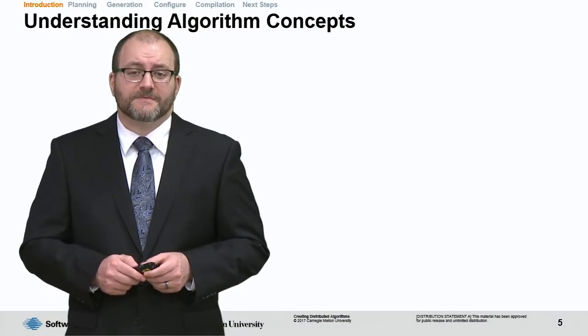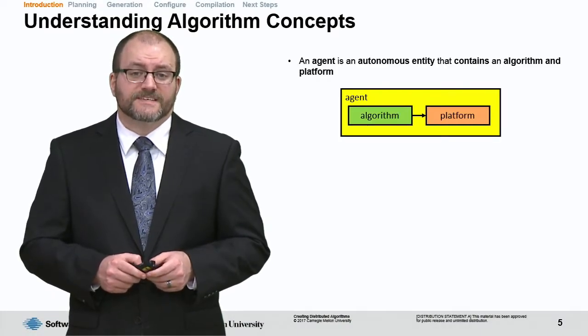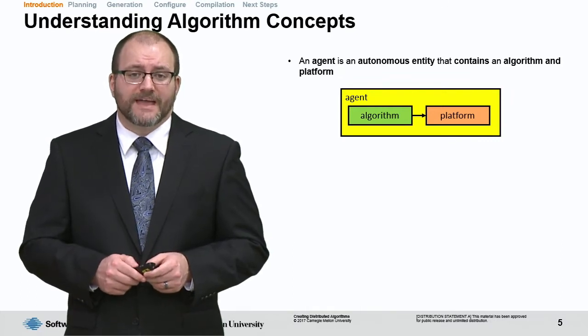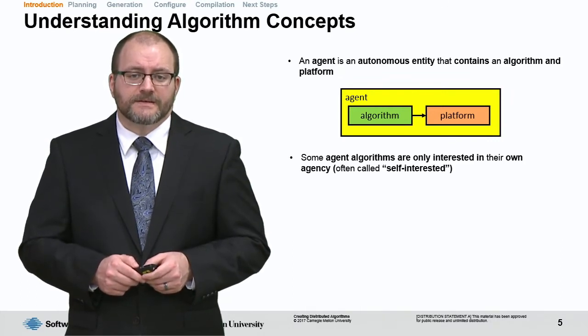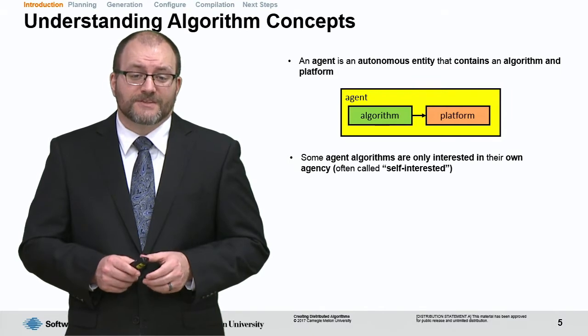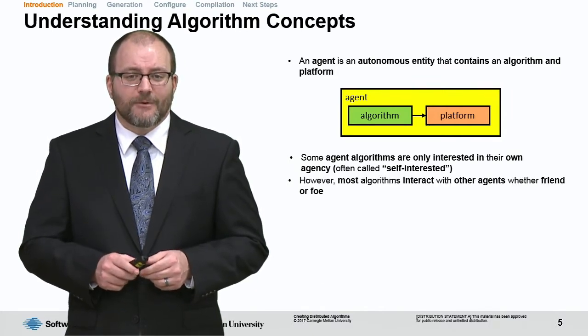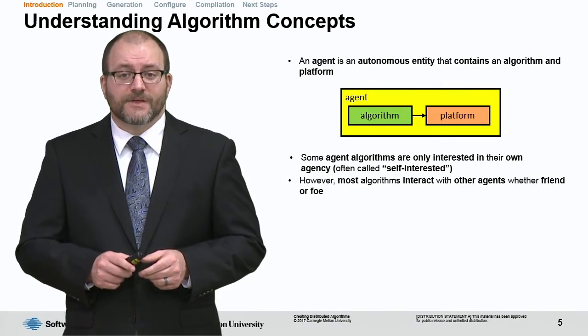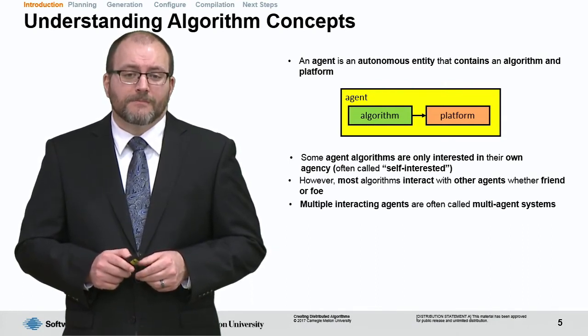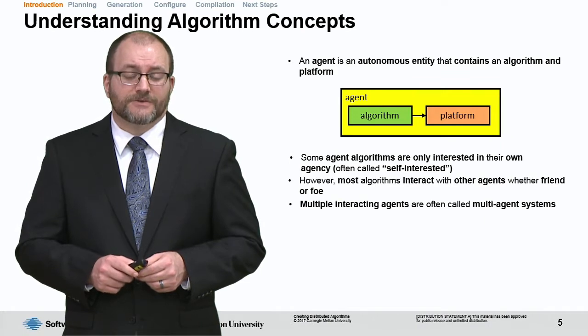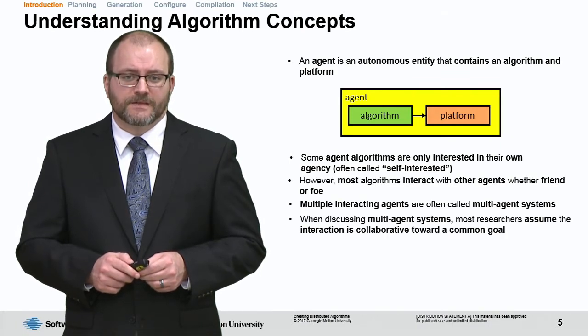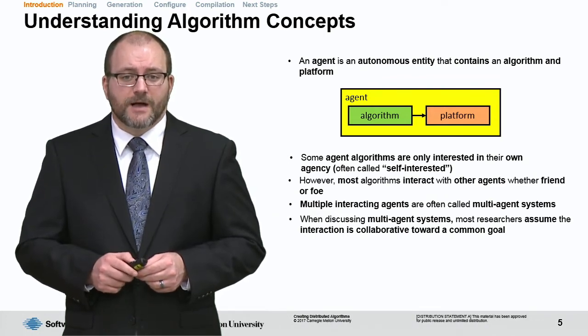Next, let's talk about the concept of agents. An agent is an autonomous entity that contains an algorithm and a platform in GAMS. Some agent algorithms are only interested in their own agency. We often call these agents self-interested. However, most algorithms interact with other agents, including friends or foes. Multiple interacting agents are often called a multi-agent system. When discussing multi-agent systems, most researchers assume the interaction they're doing is collaborative toward a common goal.